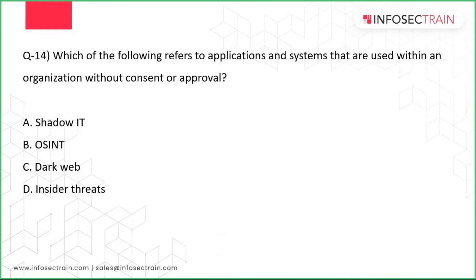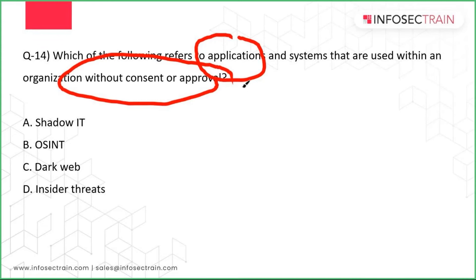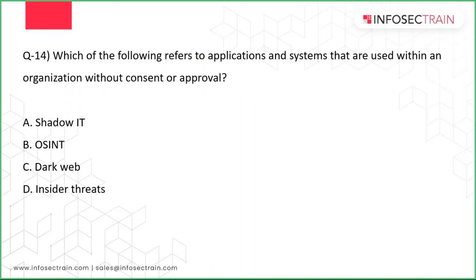Question 14 asks: which of the following refers to applications and systems used within an organization without consent or approval? The first option is shadow IT — any application, system, or hardware not authorized by your IT department, organization, or manager that you bring in and use. That is exactly shadow IT. Option A looks correct, but let's verify the others.